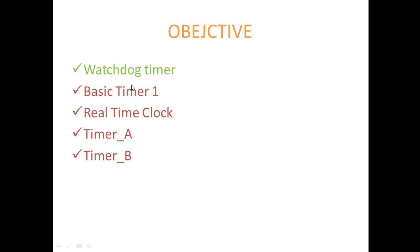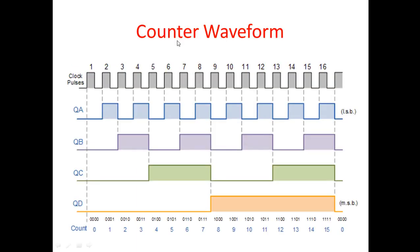In today's video lecture, we are going to mainly cover the watchdog timer. Before getting into this timer concept, we require some basic knowledge from digital circuit design — specifically counters, synchronous or asynchronous. Here I have been considering a simple counter waveform with a positive edge triggered counter and a 4-bit counter. For every positive rising edge, the counter gets incremented. You can see QD is the MSB bit and QA is the LSB bit.